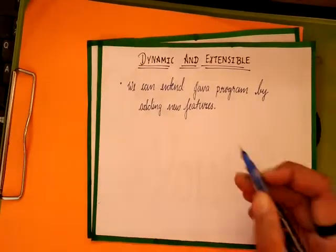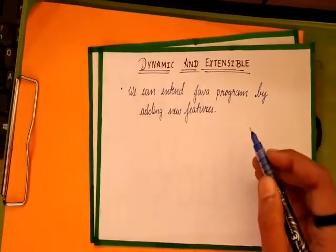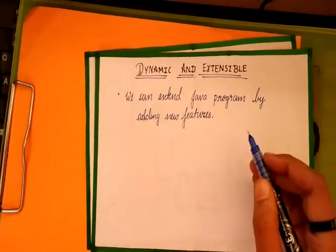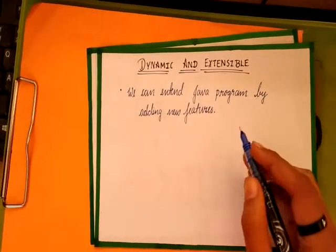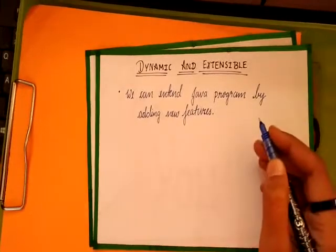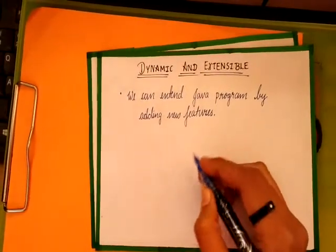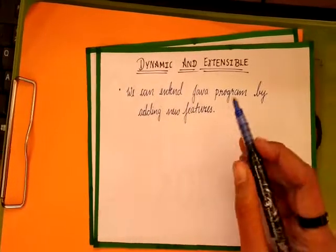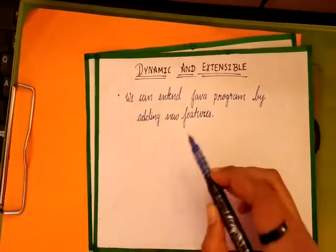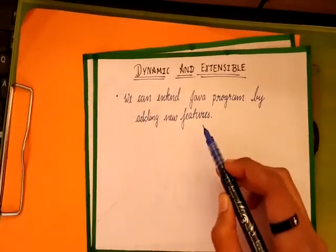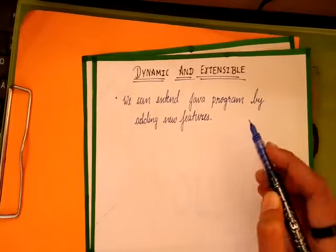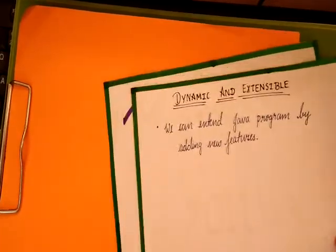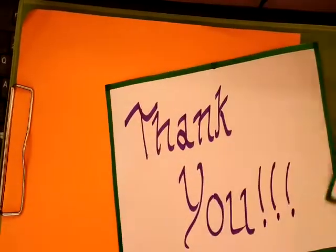The next feature is Dynamic and Extensible. It is a dynamic language and has the ability to link any new library to the Java program if it is required during runtime. We can also extend the Java program by adding new features. So, these are the features of Java. Thank you.